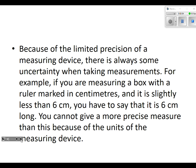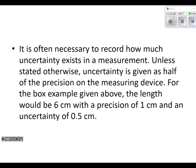If you're measuring a box with a ruler marked in centimeters, it's slightly less than six centimeters. You have to say that it is six centimeters long. You cannot give a more precise measure than this because of the units of the measuring device. It's obviously necessary to record how much uncertainty exists. Unless stated otherwise, uncertainty is given as half of the precision. For the box example given above, the length would be six with a precision of one and an uncertainty of 0.5. Where do we get the 0.5 from? Half of one.